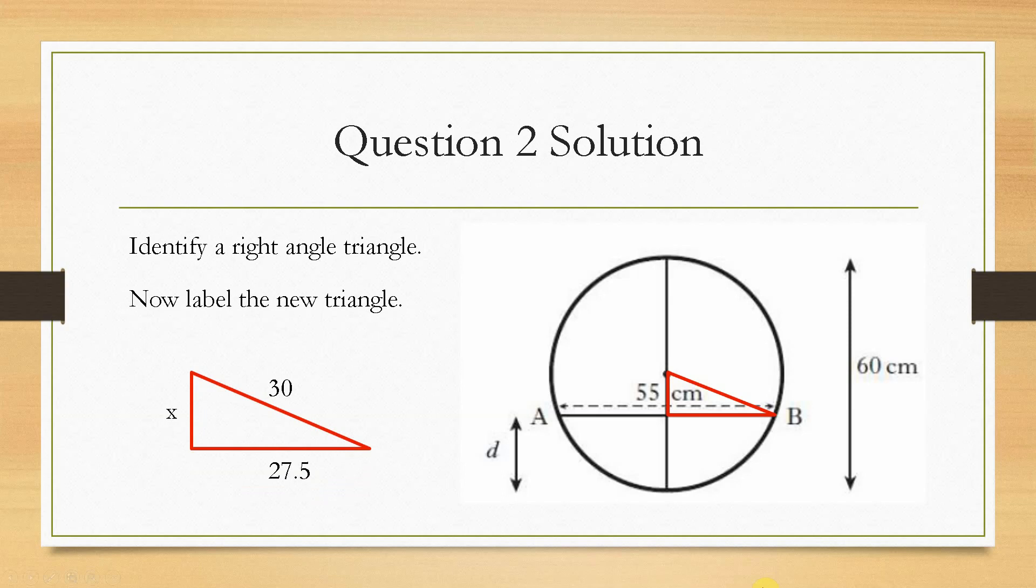Now, the hypotenuse is always the longest side, i.e. the radius, because it goes from the centre to the outside. Diameter is 60, radius is 30. 55 centimetres, the whole width of A to B, we half that, we get 27.5.